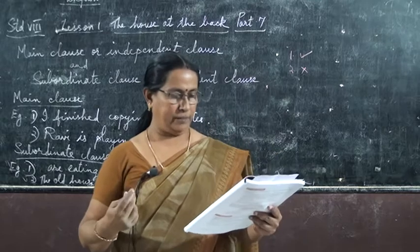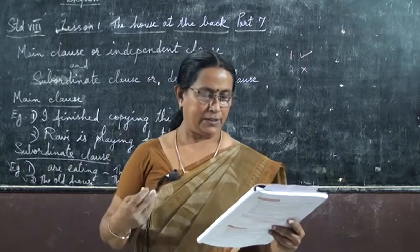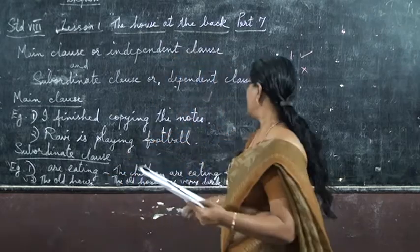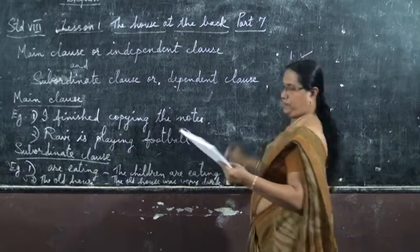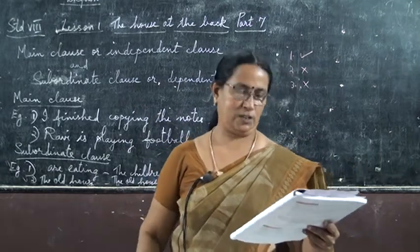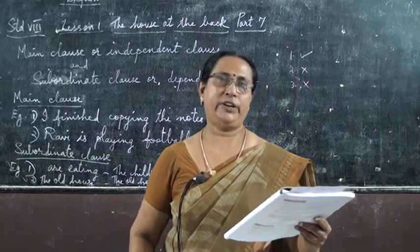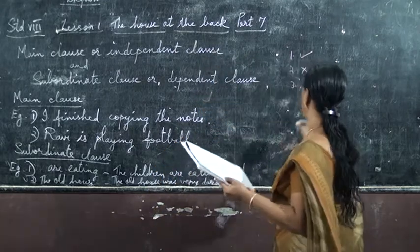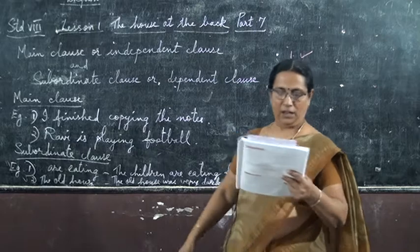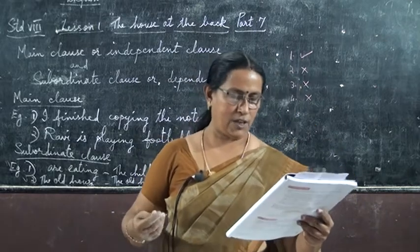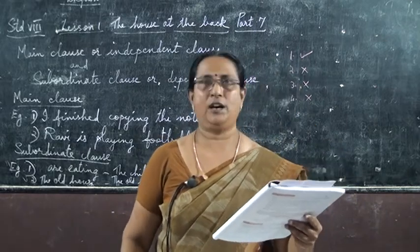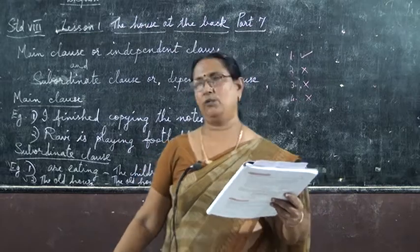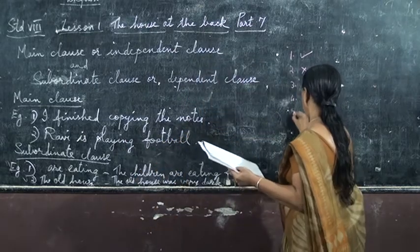Number three: 'That had EB monogrammed on it' — that is also not a complete sentence, so number three is wrong. Number four: 'When they heard the gardener call out' — that is not a complete sentence, so number four is also wrong. Number five: 'The two girls went towards Miss Brown's house' — that makes a complete meaning, so number five is correct; it is a complete sentence.